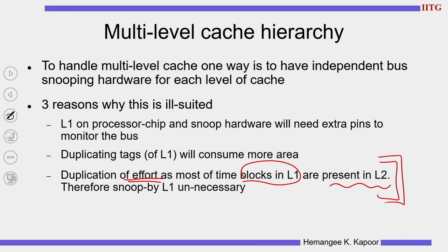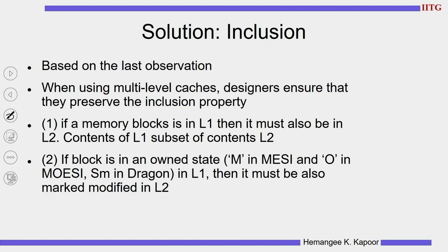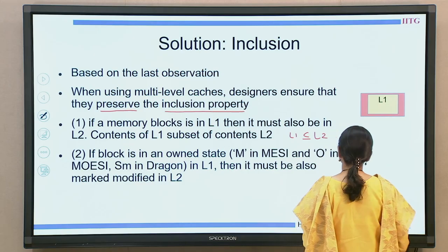This property is called the inclusion property, where the L1 cache is a subset of L2. The last observation of inclusion — can I use that as a solution for my multi-level cache hierarchy? I am not going to have a bus snooper for L1, and the bus snooper for L2 alone can help. While doing this, I need to ensure that the inclusion property is preserved. If a memory block is in L1, then it must also be in L2 — that is the definition of inclusion.